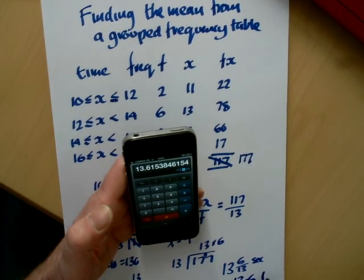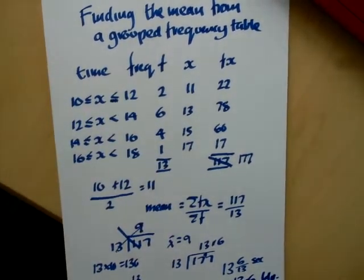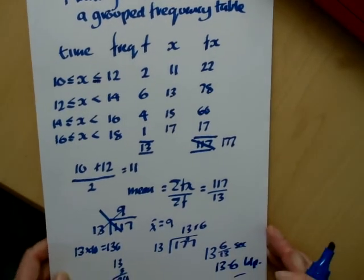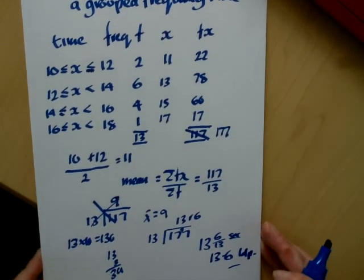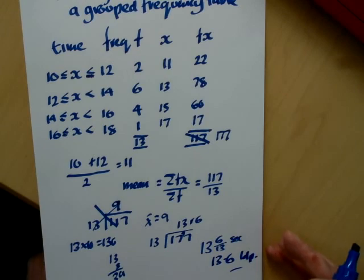So that is the mean from a grouped frequency table, showing you how to check if your answer is right and to make a correction when it was incorrect.